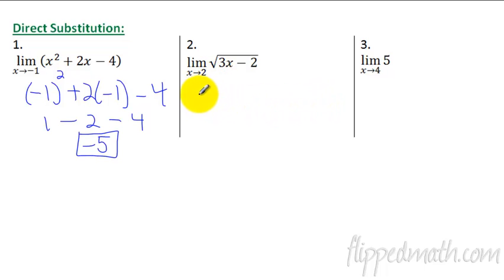So again, here, just plug it in. So 3 times 2 minus 2 is equal to the square root of 6 minus 2, which is 4. And that equals 2. Last one. Number 3. If you have a constant, where in the world do you plug the 4 in? There's no variable to plug it into, so it's just going to equal whatever that constant is. And that makes sense if you think about the graph.